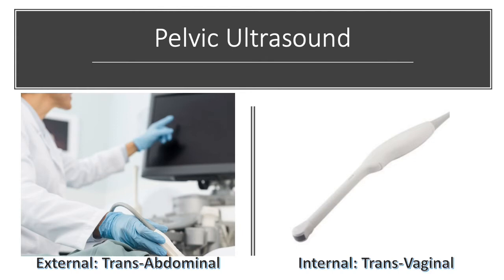When you arrive at your scan, we will first perform the scan through an external method, also called the transabdominal scan. This is the most common way of performing most general ultrasounds, not just the pelvic ultrasound. This will give us a good idea of what's going on within the pelvis, and often for many patients this is all that's needed because you can get excellent visualization of all the pelvic organs.